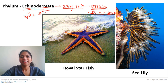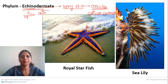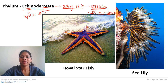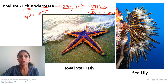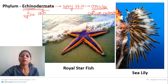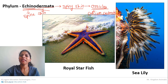There are other starfish that show hexamerous or tetramerous symmetry. Adults always show radial symmetry, while larval stages are bilaterally symmetrical. This is also a specificity of Echinodermata — radial symmetry in adults and bilateral symmetry in larval stages.